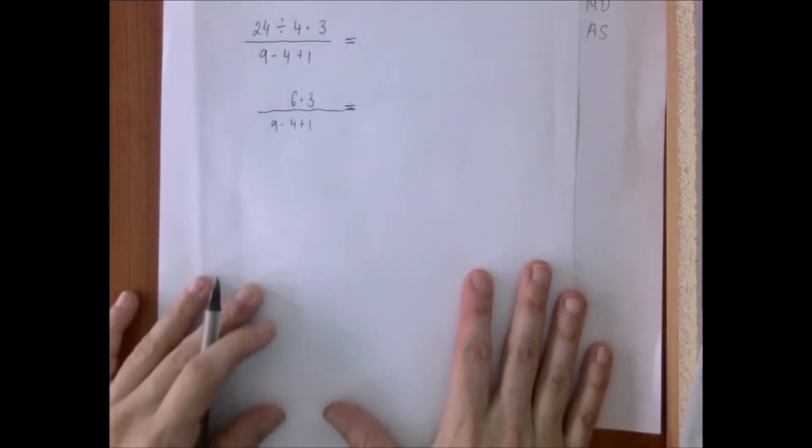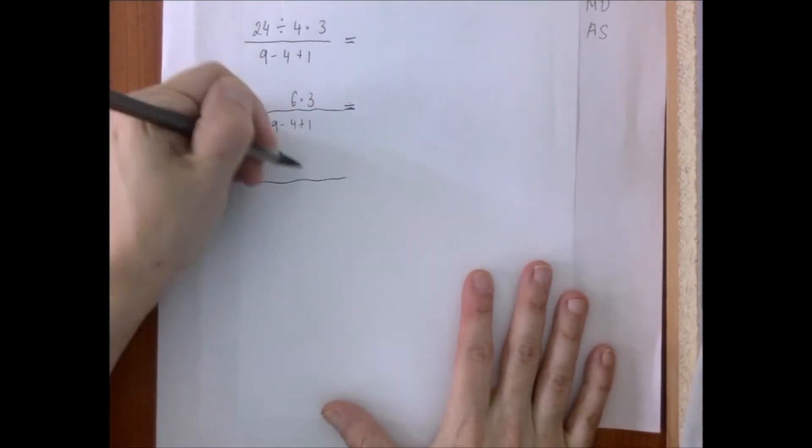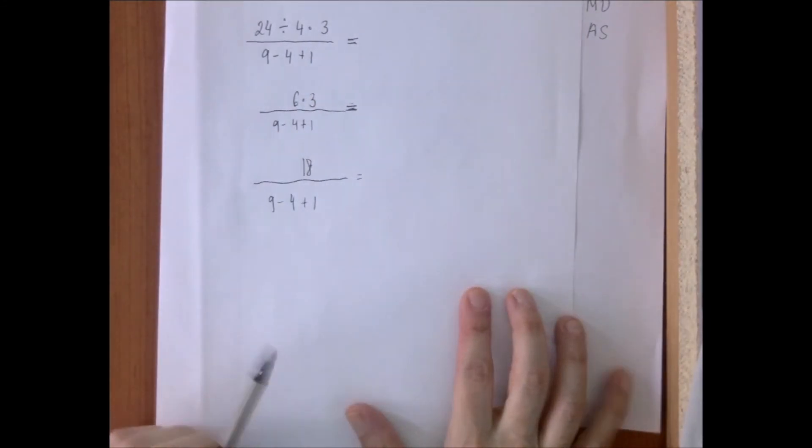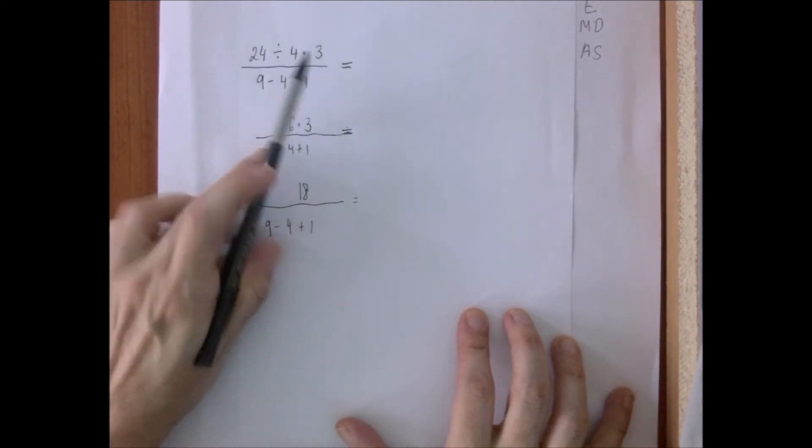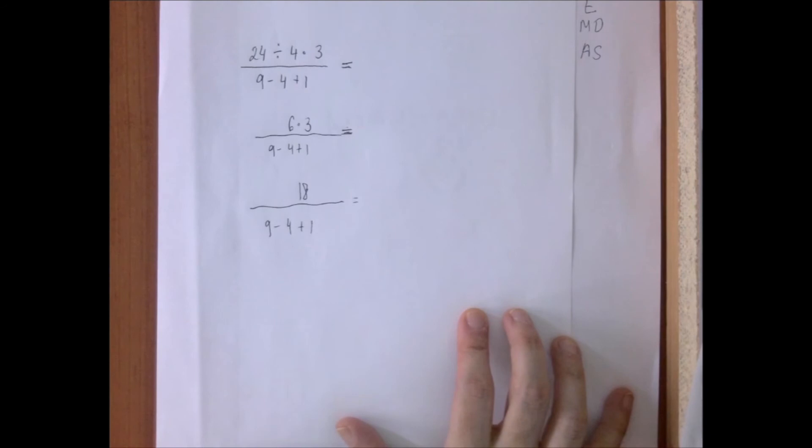Okay, 6 times 3 is 18. Now notice that if we incorrectly did 4 times 3, 12, and we divided 24 by 12, we would get the wrong answer. We would get 2 and not 18. Okay.